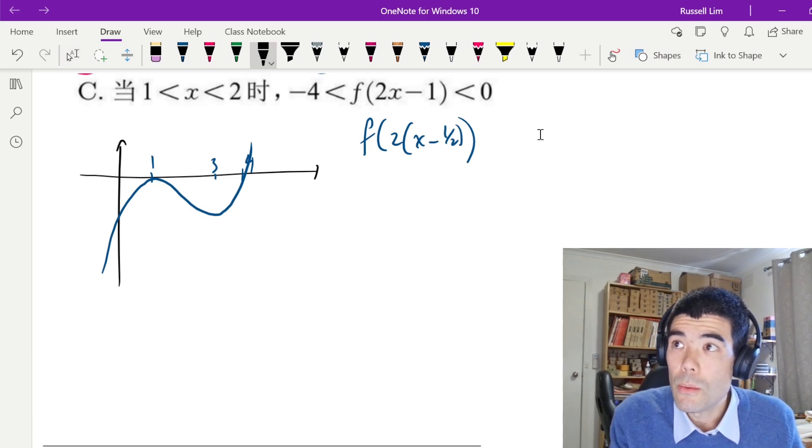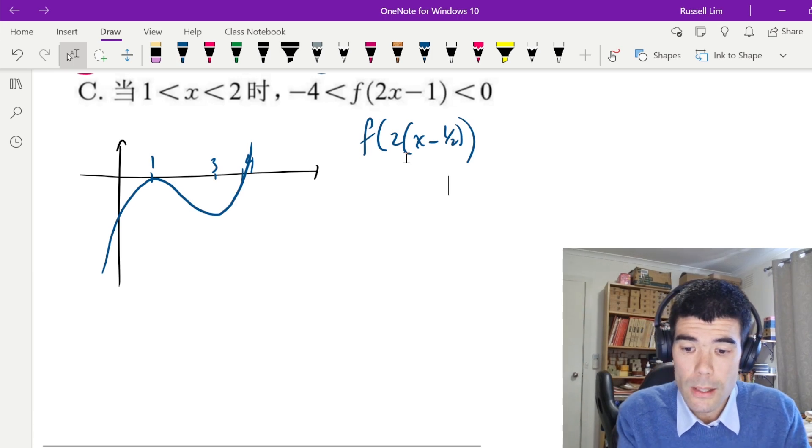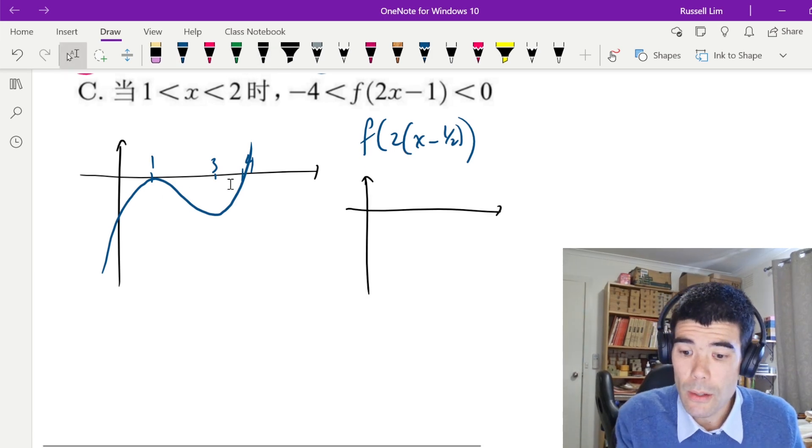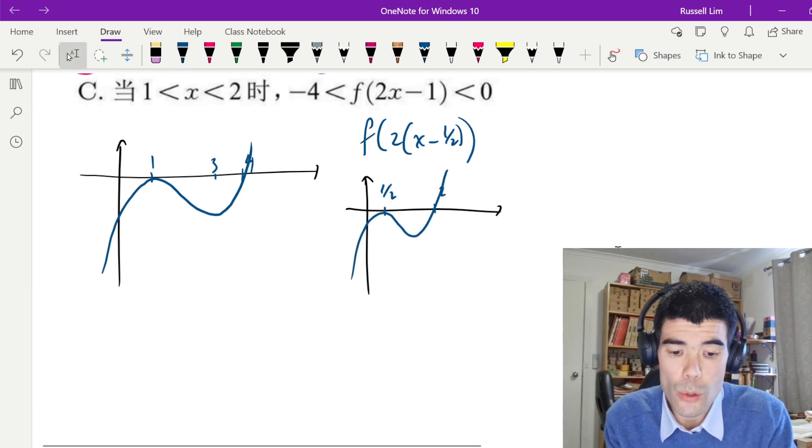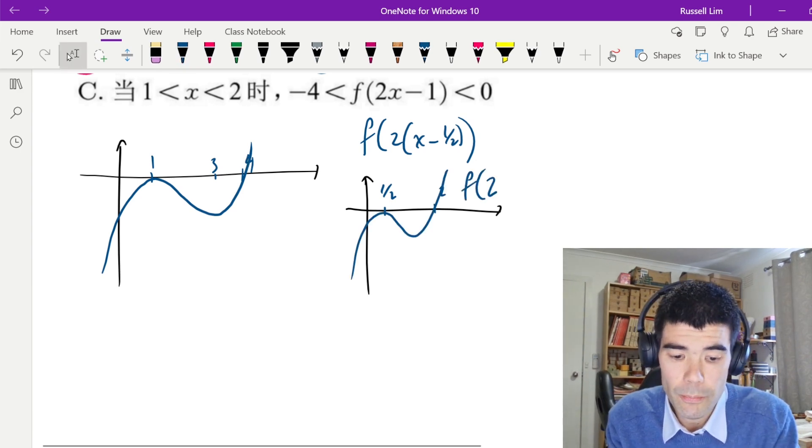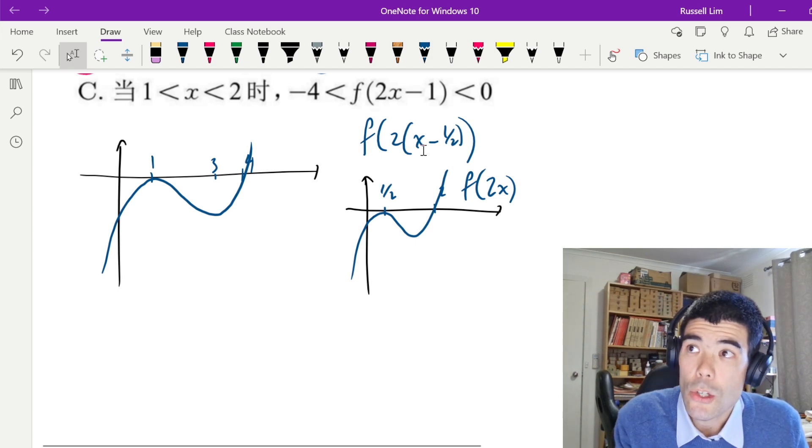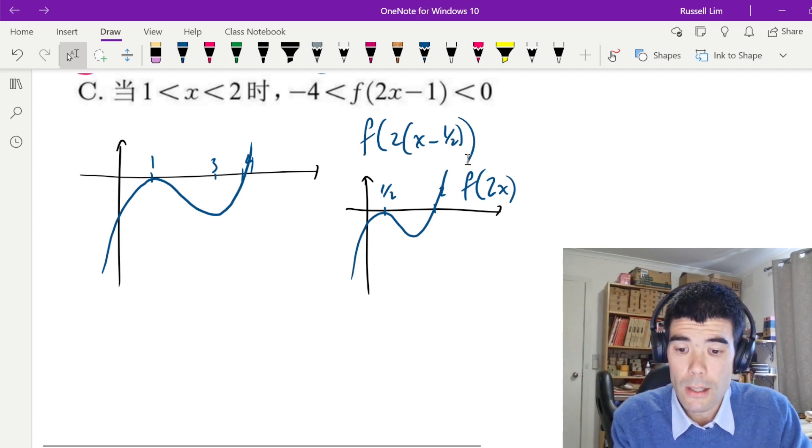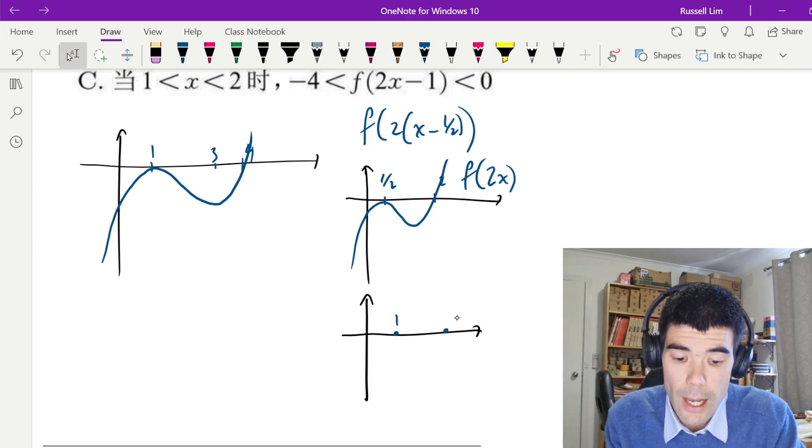So if we deal with the 2 first, this is the dilation of factor 2 from the y-axis. We're going to half each of our x values. So instead of 1, we have half. Instead of 4, we have 2. And this is going to be the graph of f(2x). Now we want to basically take this and shift it by half a unit to the right. So half is going to be shifted back to 1 now. 2 is going to be 2 and a half.